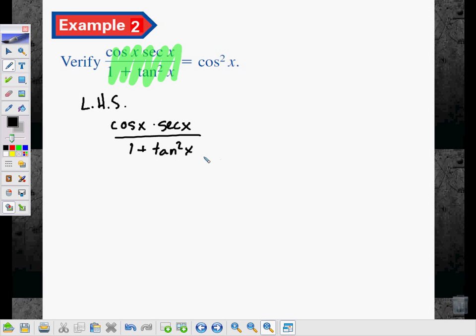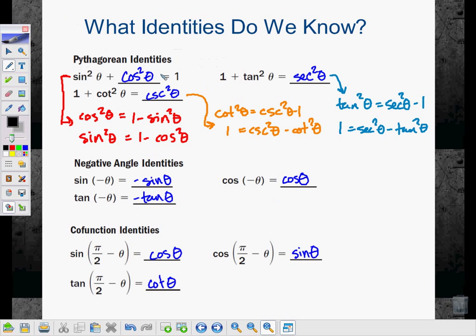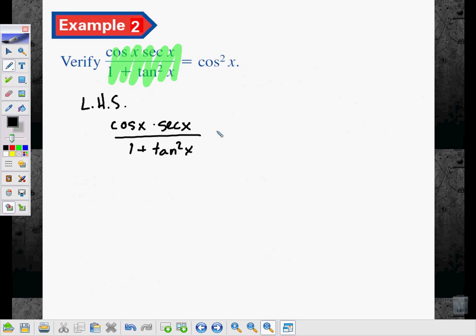And now I look for anything. Just do anything that I could possibly do with this. Well, down below I see a tangent squared. 1 plus tangent squared. And that makes me think of my Pythagorean identities. 1 plus tangent squared is secant squared. So I'm going to use that. I'm going to rewrite the denominator as secant squared. So the numerator stays the same and I turn the bottom into secant squared x.